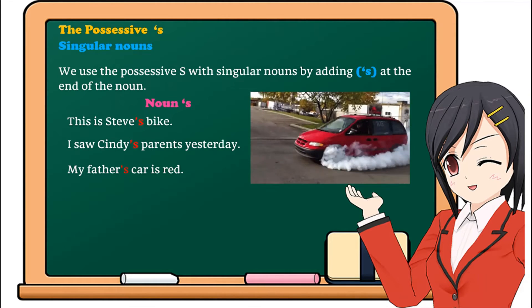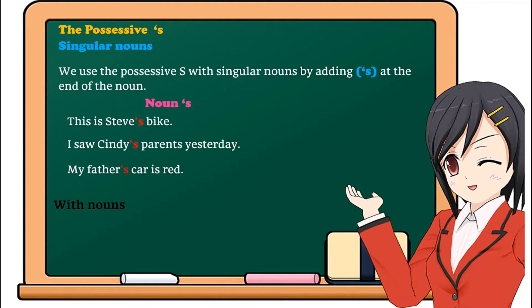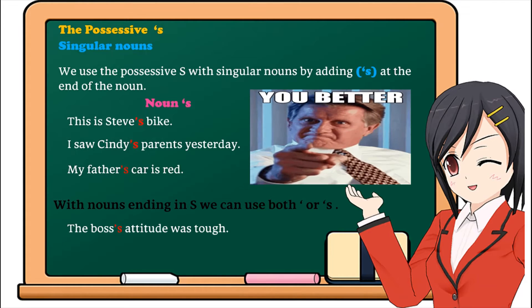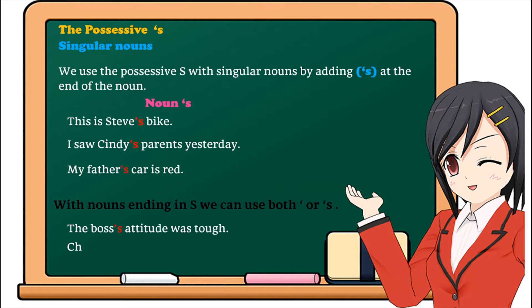With nouns ending in S, we can use both the apostrophe or the apostrophe S. But personally, I would recommend just the apostrophe. For example: the boss's attitude was tough, or Chris' girlfriend is beautiful.